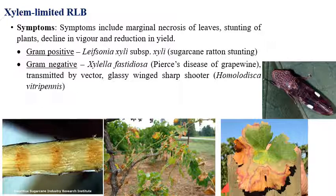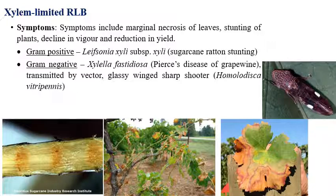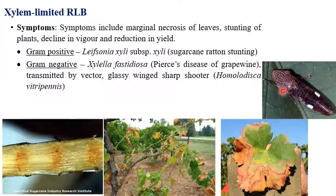Moving to gram-negative xylem-limited bacteria: Pierce's disease of grapevine is caused by Xylella fastidiosa. These are the symptoms of this disease. Pierce's disease of grapevine is transmitted by an insect vector called the glassy-winged sharpshooter.